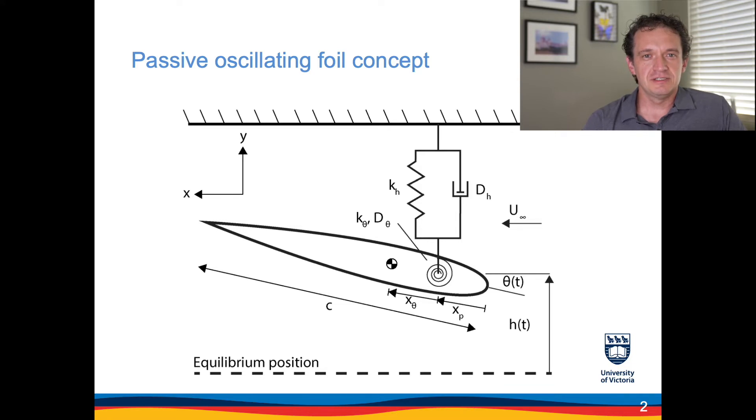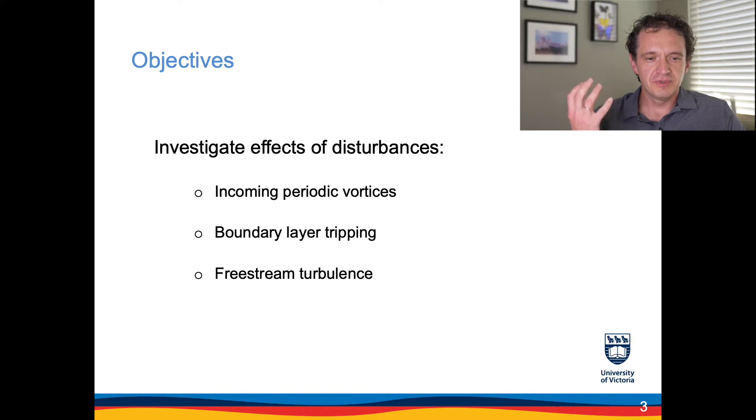We look at the disturbances to the inflow. In particular we will use three types of disturbances: one is the incoming periodic vortices that this foil will encounter, the tripping of the boundary layer on the surface of the foil itself, as well as the variation of the free stream turbulence levels.